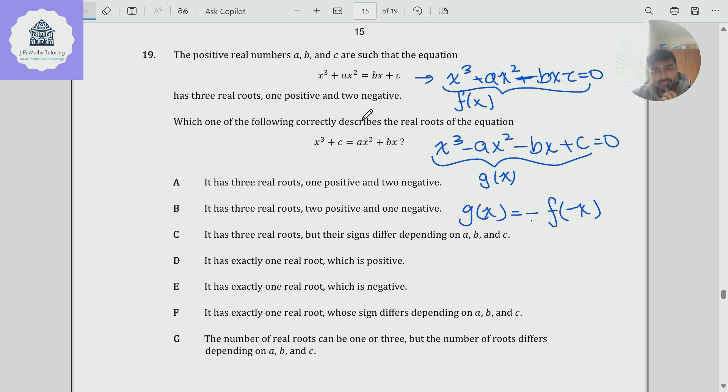And so therefore, we're interested in the roots of g of x. So g of x equals zero. Well, that's if and only if minus f of minus x is zero, which would just mean f of minus x is zero. And so that means that if we find the roots of f of minus x, those will be the roots of g of x.